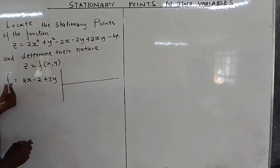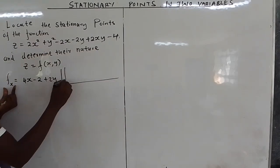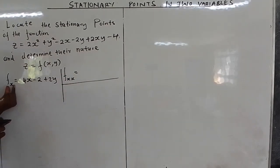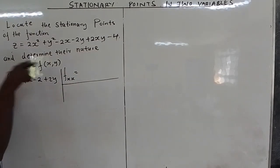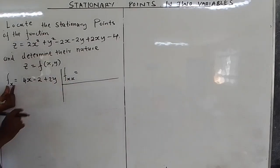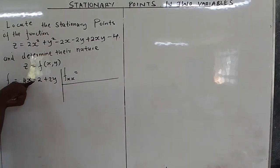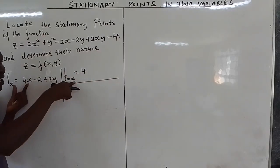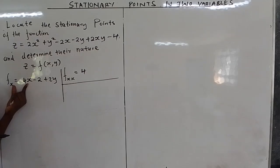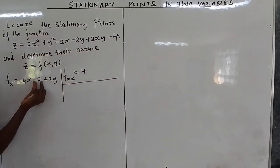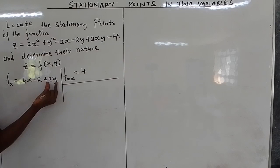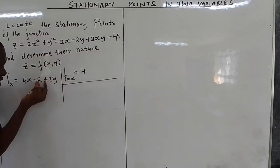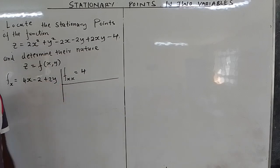So the first partial derivative with respect to x gives us 4x minus 2 plus 2y. Now for the second partial derivative, we differentiate this again with respect to x. Differentiating 4x with respect to x gives 4. Differentiating a constant gives 0, and 2y is also a constant with respect to x, so all remaining terms become 0. Therefore ∂²z/∂x² equals 4.